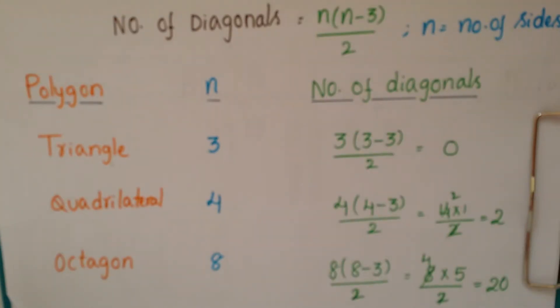If you take an octagon, it has 8 sides. So 8(8-3)/2, that is 8×5/2, which equals 20. So an octagon has 20 diagonals.